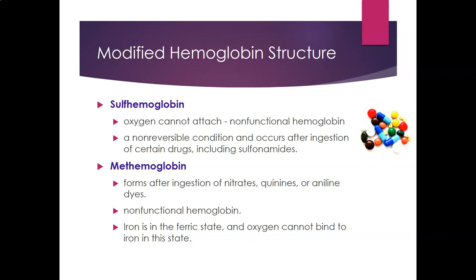Sulfhemoglobin is non-functional hemoglobin in which oxygen cannot bind—it is a non-reversible condition occurring after ingestion of certain drugs including sulfonamides; a sulfur molecule binds to the iron on heme, preventing oxygen binding. Methemoglobin forms after ingestion of nitrates, quinine, or aniline dyes. It is also non-functional; in methemoglobin, iron is in a ferric state instead of a ferrous state, so oxygen cannot bind.